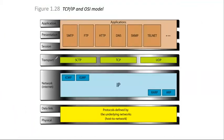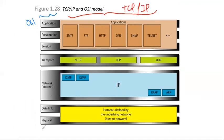Looking at the diagram, the black model is the OSI model and the other is the TCP/IP model. The physical and data link layers together are known as host-to-network — protocols defined by the underlying network. The network layer is known as the internet layer, where we have IP addresses and various internet-related protocols. Then there is the transport layer. The application layer here includes protocols such as SMTP, FTP, HTTP, DNS, and SNMP, combining the OSI application, presentation, and session layers.